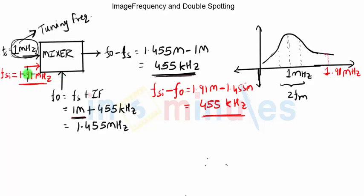So one place on my frequency band where I can listen to 1.91 megahertz is the same frequency itself. But I can also listen to 1.91 megahertz when I tune my receiver to 1 megahertz, due to the calculations we just worked out. Hence I can conclude that the 1.91 megahertz radio station can be listened to at one more place in the frequency band, which is 1 megahertz. This is called double spotting — the phenomenon in which one radio station is heard at two different places.